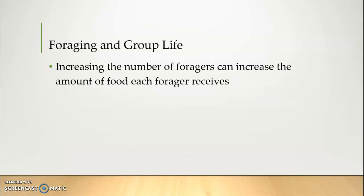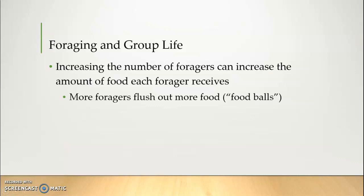So an individual might get X amount of food foraging alone, but if they join up with others, they get X plus Y. Sometimes this happens purely by accident — the presence of more individuals is simply more likely to produce food. For instance, birds hunting insects in grass: the more birds poking around, the more likely insects are to fly up. Even if I don't flush one out myself, you might catch it, and you could flush one that I catch, so we all wind up with more food. More foragers basically means more food for everybody.